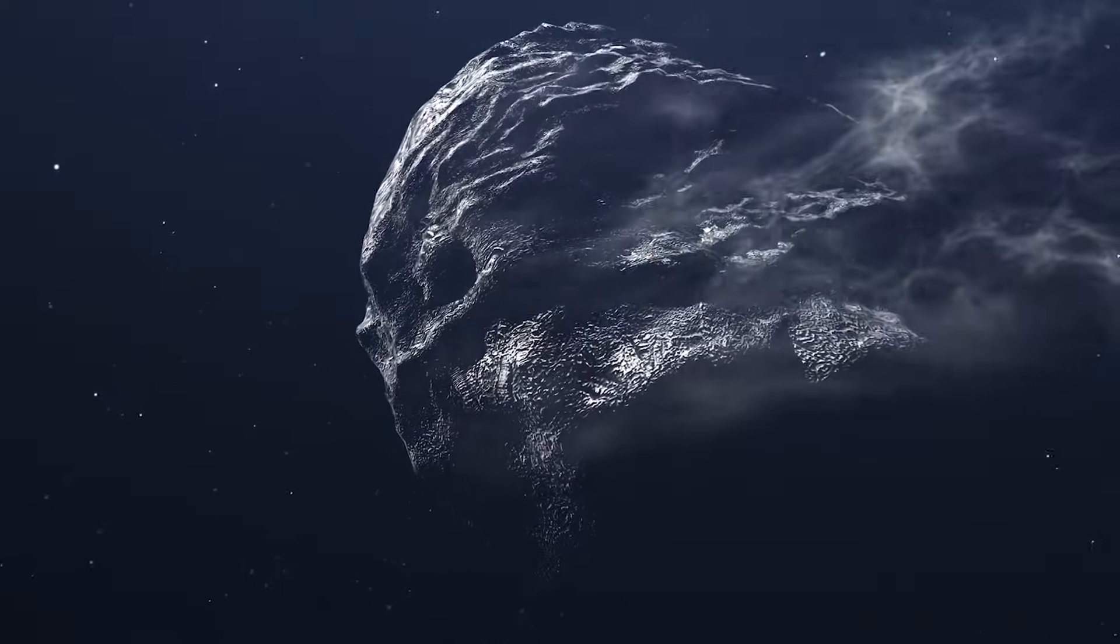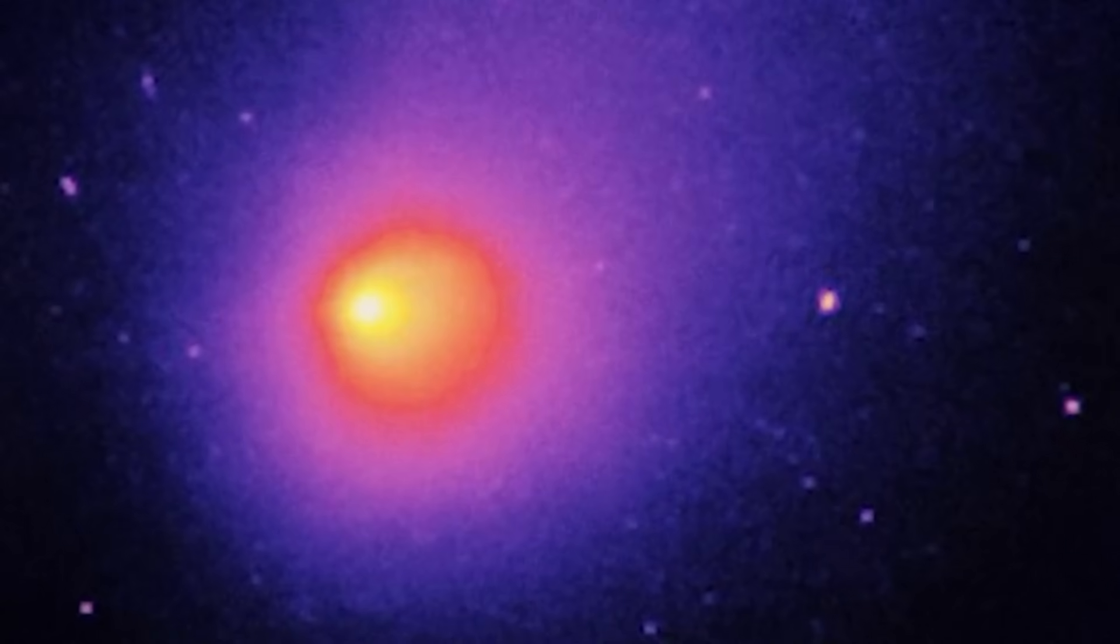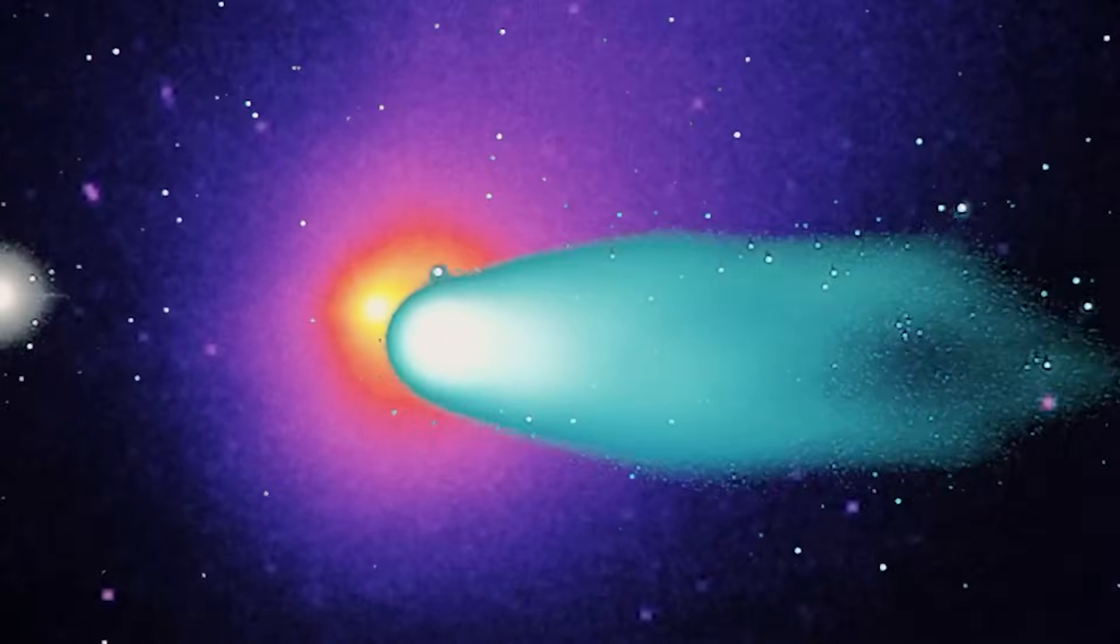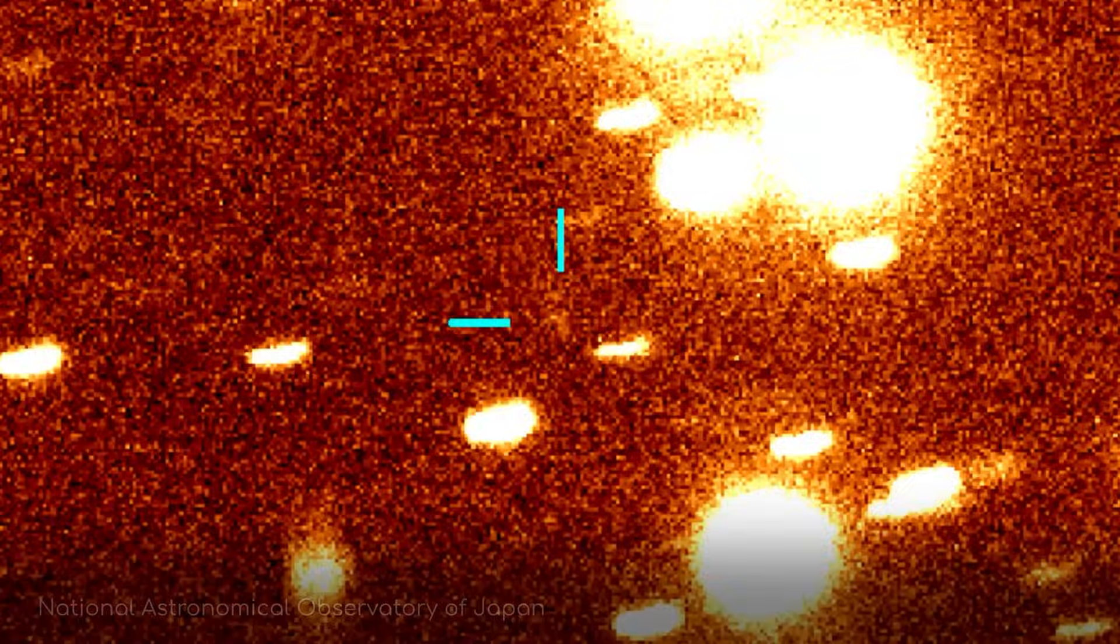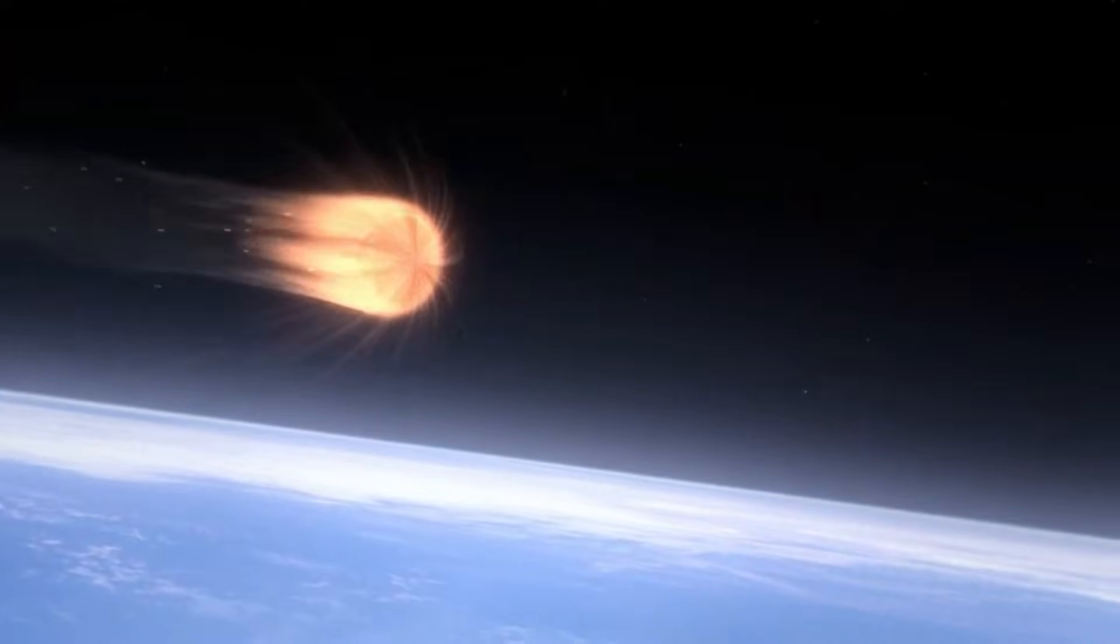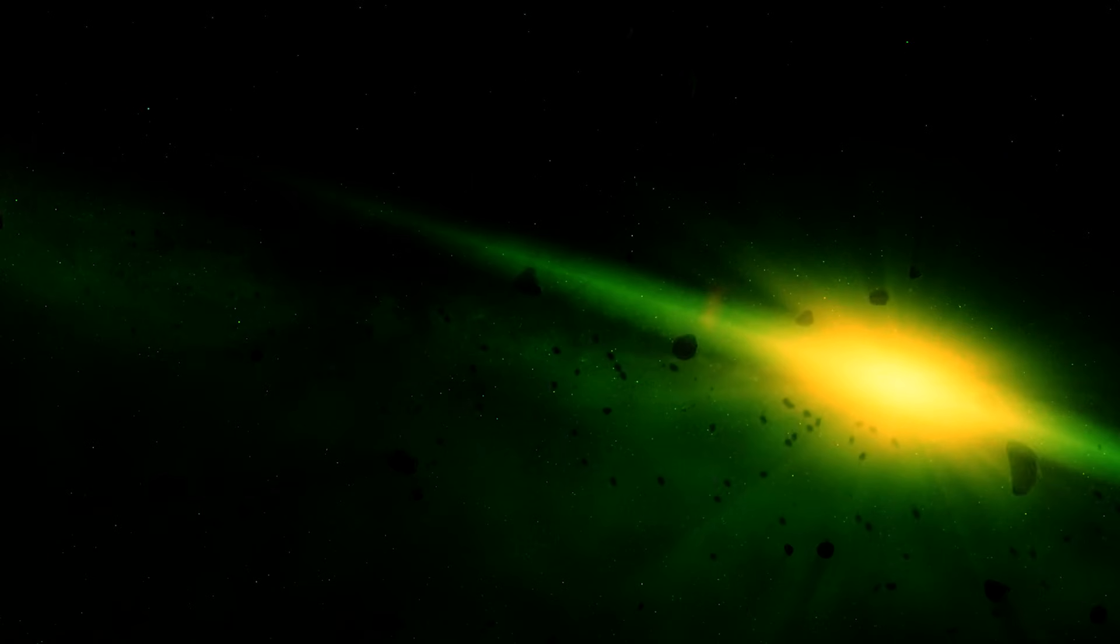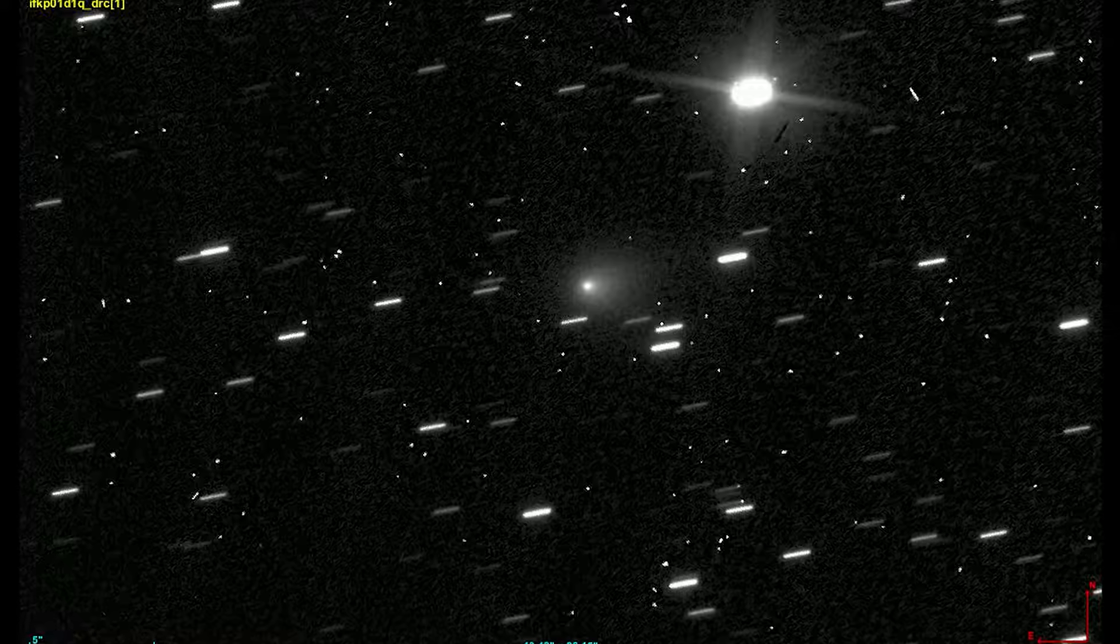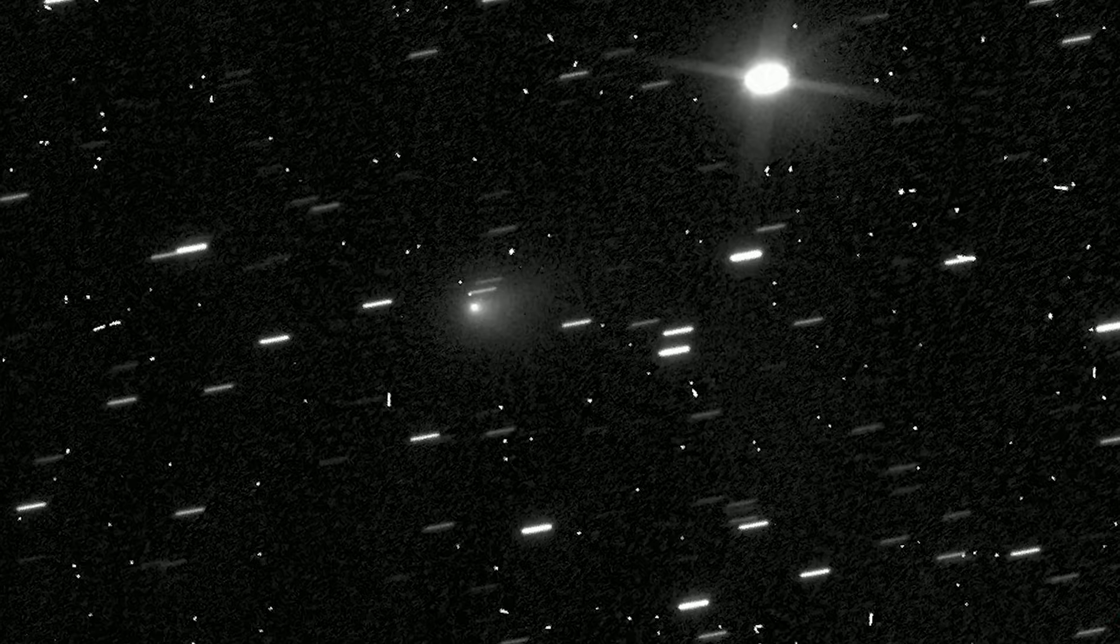That's a significant jump in brightness, and it wasn't a temporary outburst. The brightness increase was sustained and continued to accelerate as the comet approached perihelion. This suggests that at 2.5 astronomical units, conditions became right for liquid water to exist on the surface. Not just ice, not just vapor, but actual liquid water. And liquid water is crucial for the catalytic reactions that produce magnetite and complex organic molecules.